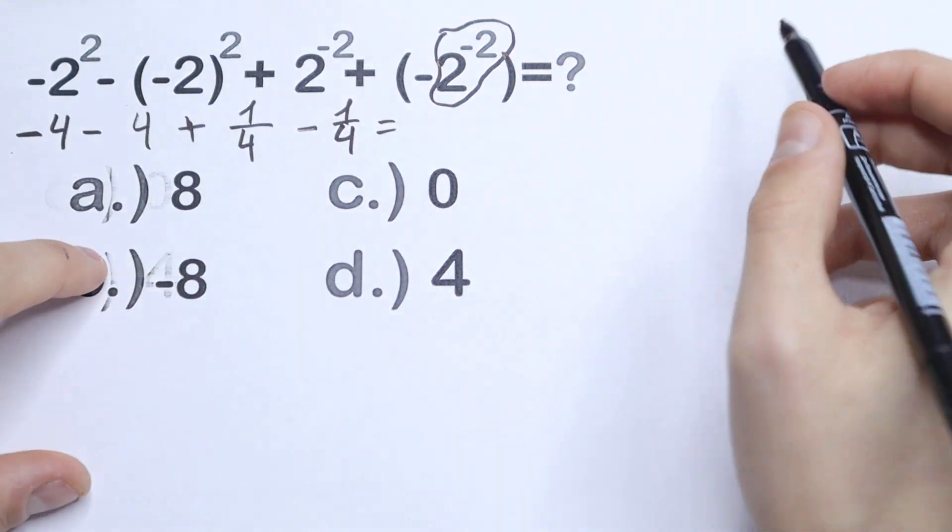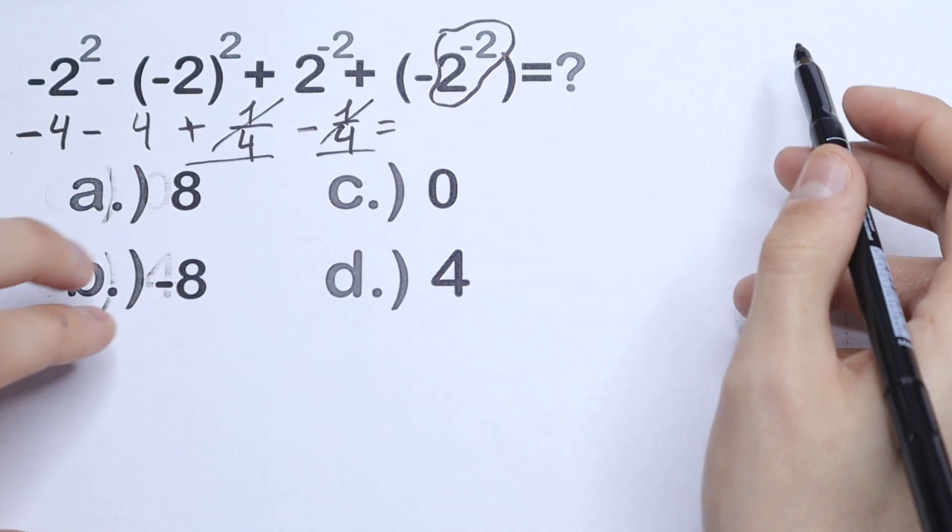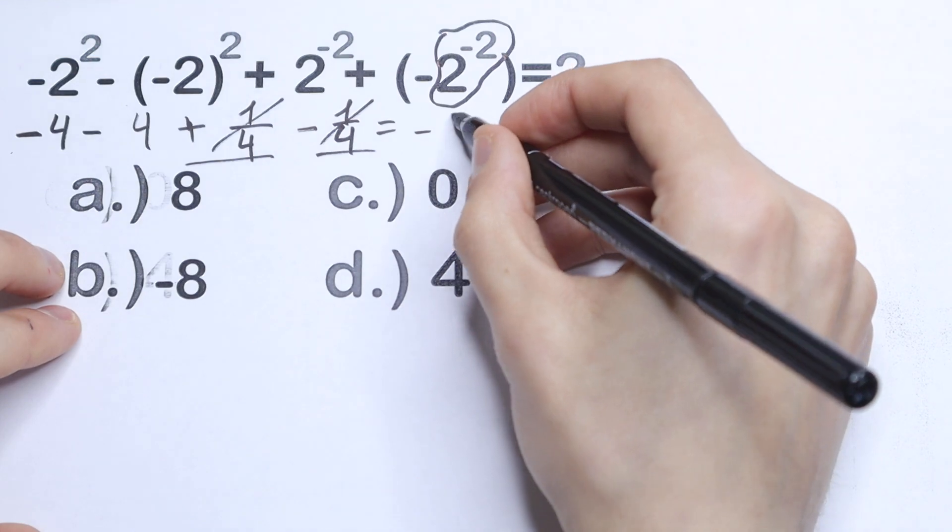And let's simplify all of these. Of course this and this one is the same, so we can cancel this. And we will have -4 - 4 will be equal to -8.